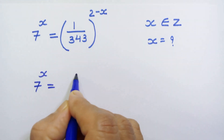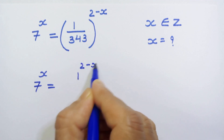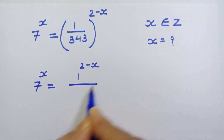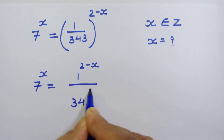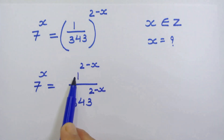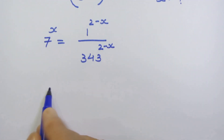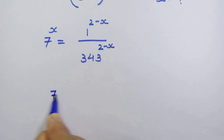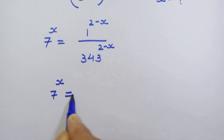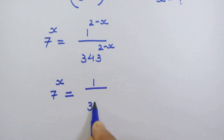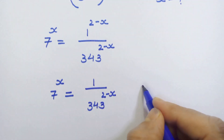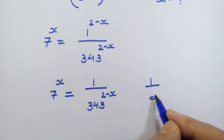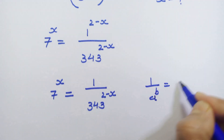First, we can write 7 raised to x is equal to 1 raised to (2 minus x) upon 343 raised to (2 minus x). Now, 1 raised to anything remains 1, so we can write 7 raised to x is equal to 1 upon 343 raised to (2 minus x).